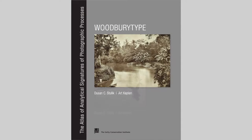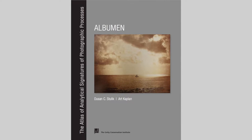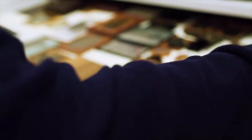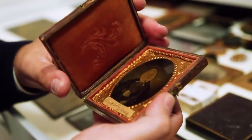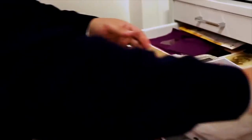Basically, a photographic process is a set of procedures and materials used to create a photographic image. It's important to know what a photographic process is because if you don't know what you have, you're not going to know how to conserve it, how to store it, how to exhibit it without causing potential damage to the object.